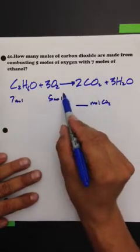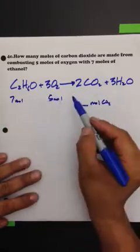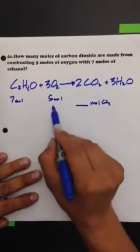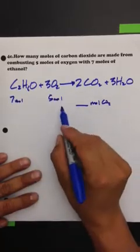Anytime you're given two amounts, it's a clue, two amounts of reactants, that it's going to be a limiting reactant problem.